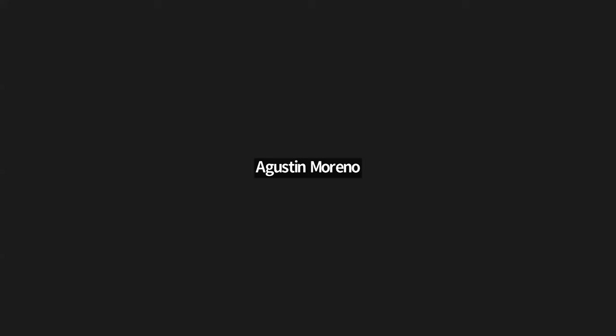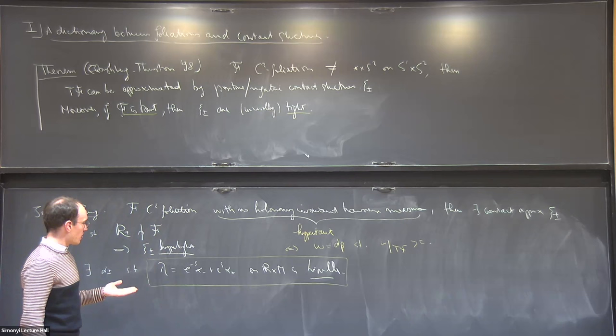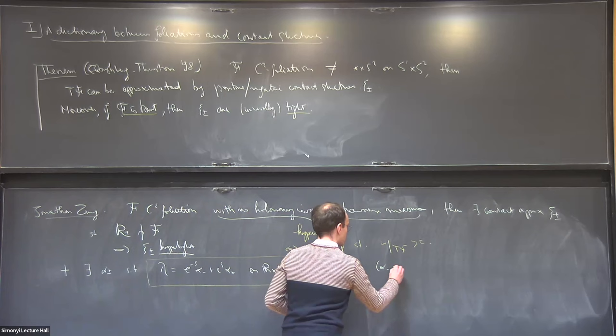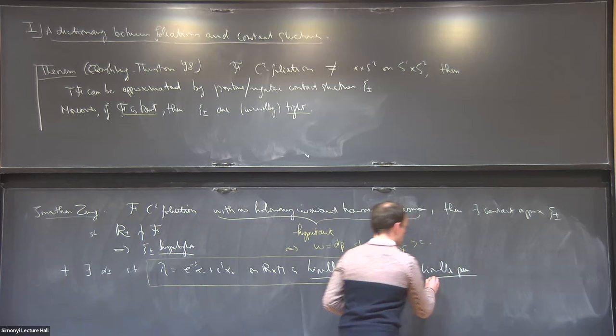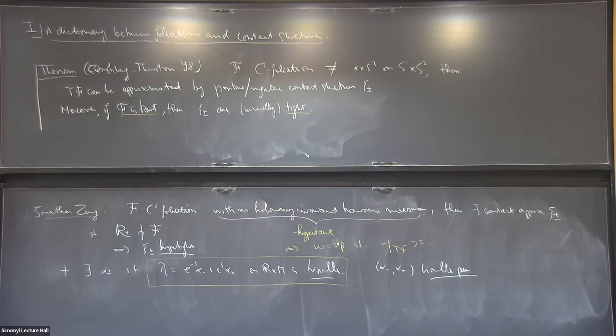From such a hypertaut foliation you get a Liouville structure on the product. This Liouville structure is very non-Weinstein because of the topology of the 3-manifold. I've been interested in these kinds of weird objects — non-Weinstein manifolds. The skeleton of such a Liouville manifold is some codimension-one copy of the original 3-manifold, and it really looks like you're trying to glue two symplectizations the wrong way. As an answer to a question: yes, for Anosov flows, the stable and unstable foliations satisfy this hypertautness condition, and you get such a Liouville structure. This pair alpha-plus, alpha-minus is usually called a Liouville pair.